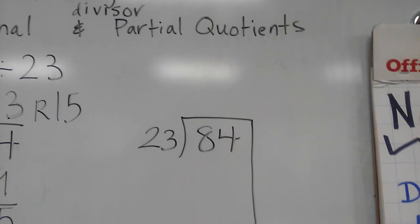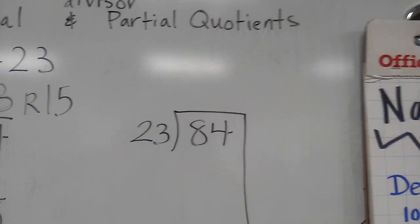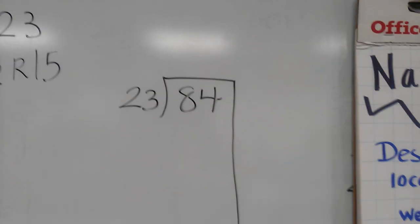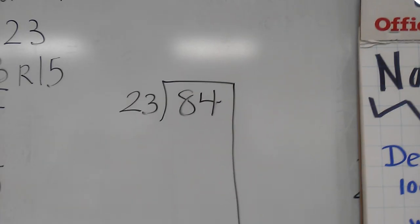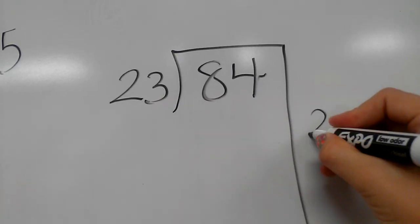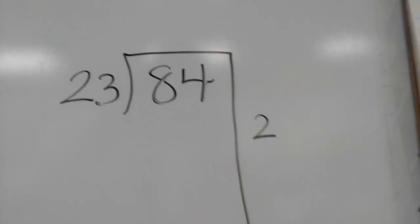So then looking at partial quotients. For this one, you guess and check. Some kids are going to want to do 23 times 1. Other kids might do 23 times 2. So I'll do 23 times 2. 23 times 2 is 46.